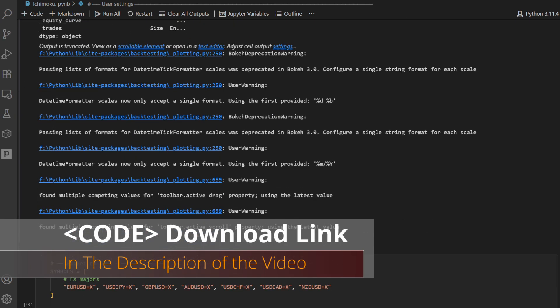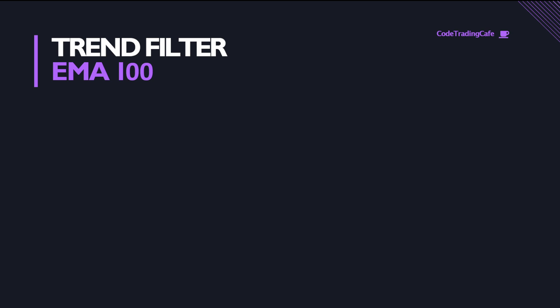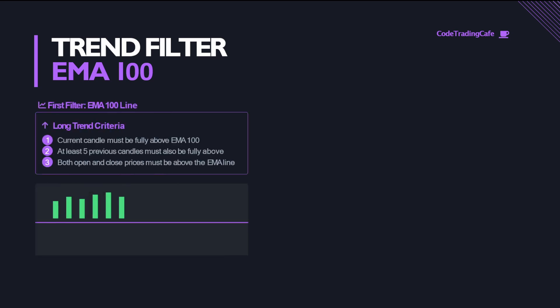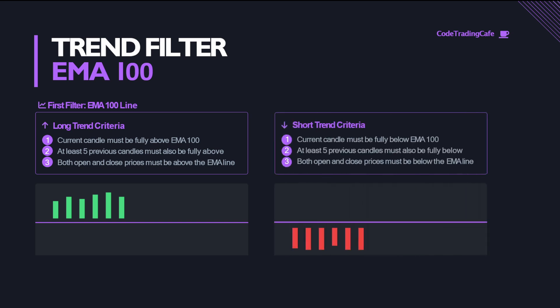Let's talk about the rules. First, we filter the trend using the EMA 100 — you might want to experiment with the moving average length. For a long trend, we need the current candle plus at least five previous candles all trading fully above the EMA curve, meaning both the open and close of each candle are above the moving average line. The same logic applies for a downtrend — all candles must be below the EMA curve.